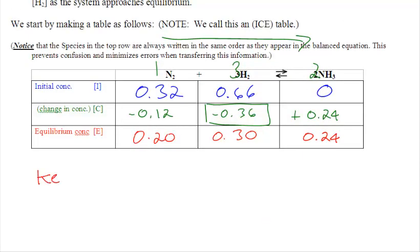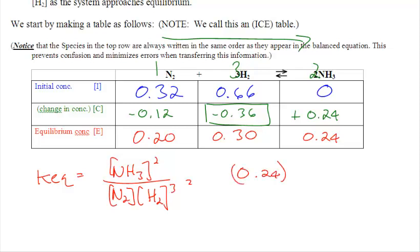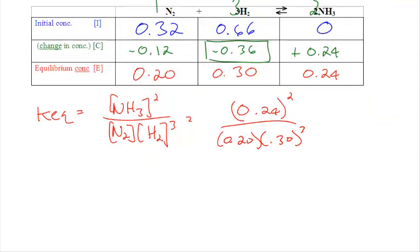To finalize this question, we want to solve for the value of Keq. So it's products over reactants, N2H2 cubed. Plug in your data, 0.24 squared over 0.20 times 0.30 cubed. Plug into the calculator. You're going to get a value of 10.6. That is the value of Keq. So that is an ice table. Let's do this one more time.